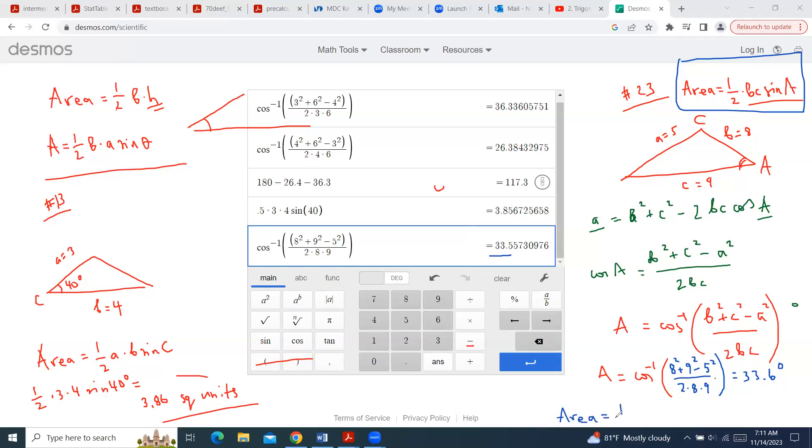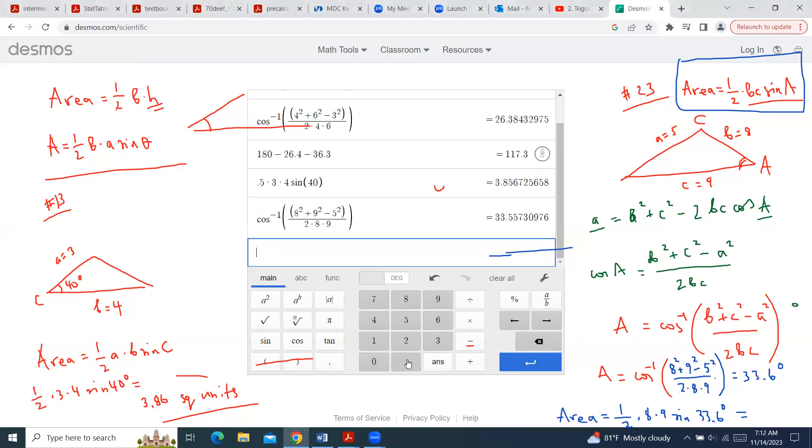And then for the next step I'm going to use this formula to get the actual answer, to get my area, which is going to be one-half multiplying sides B and C, so that's 8 and 9, and the sine of 33.6. Let's do this: 0.5 times 8 and times 9 and then multiply it by the sine of 33.6. And that's your area, 19.92.